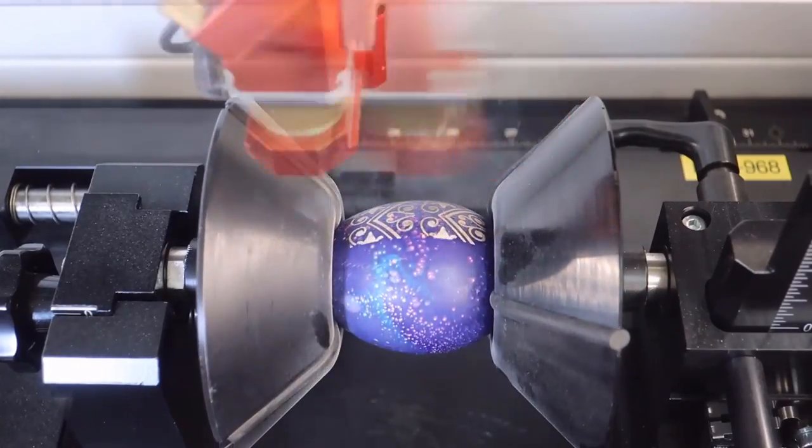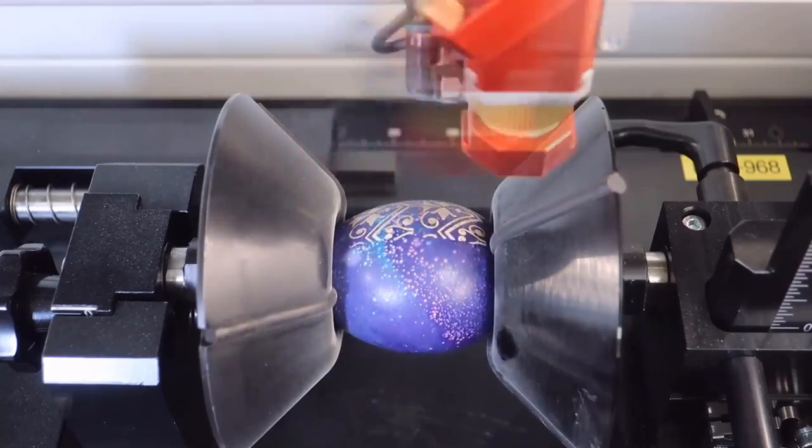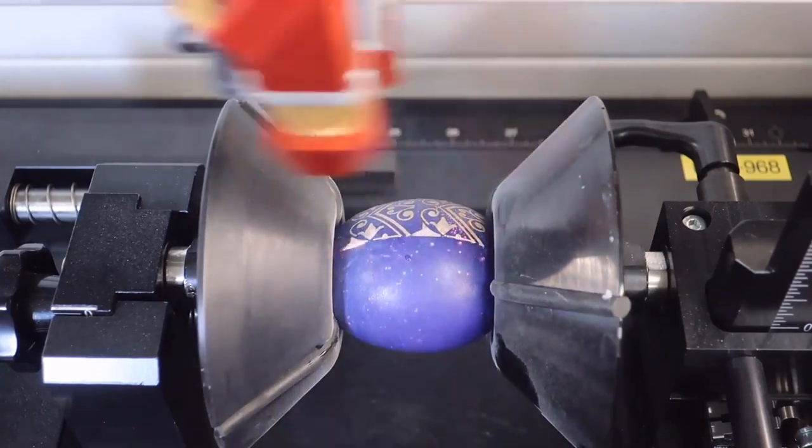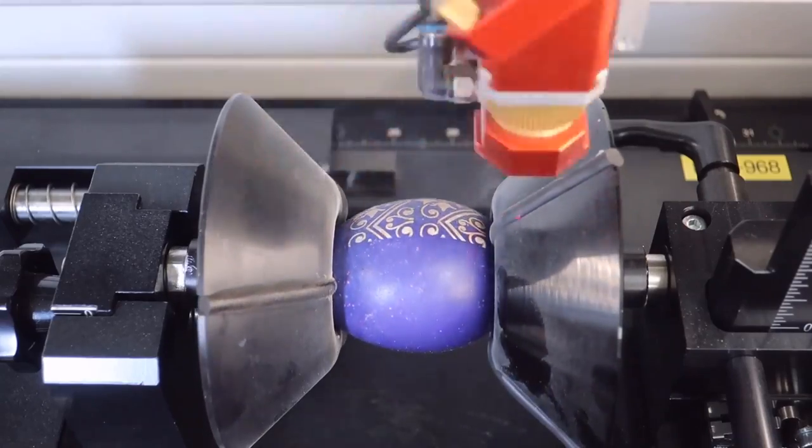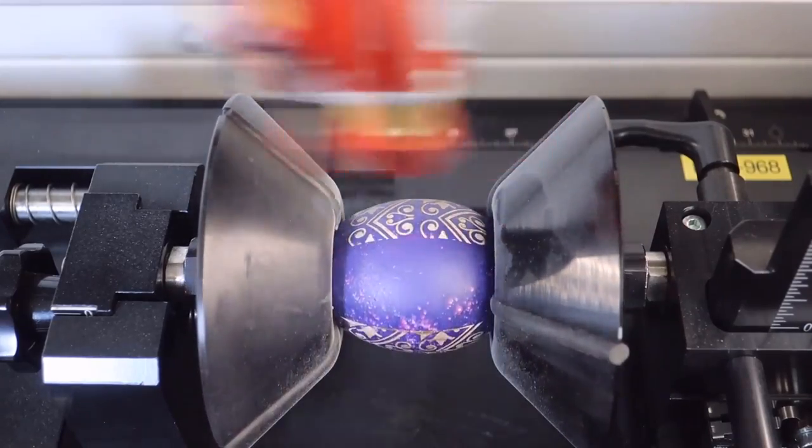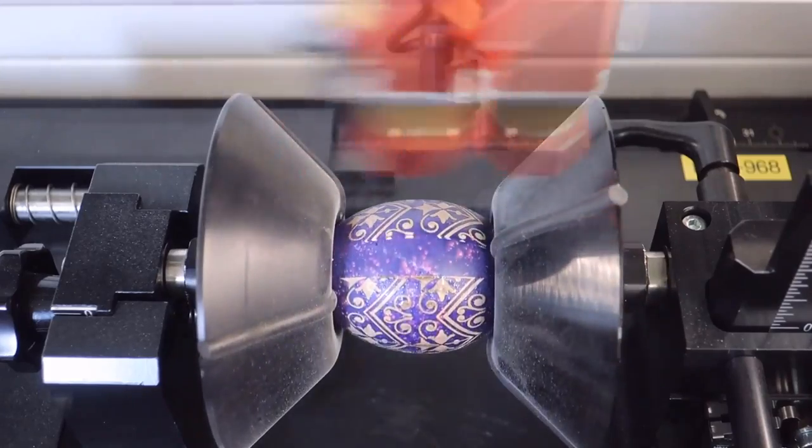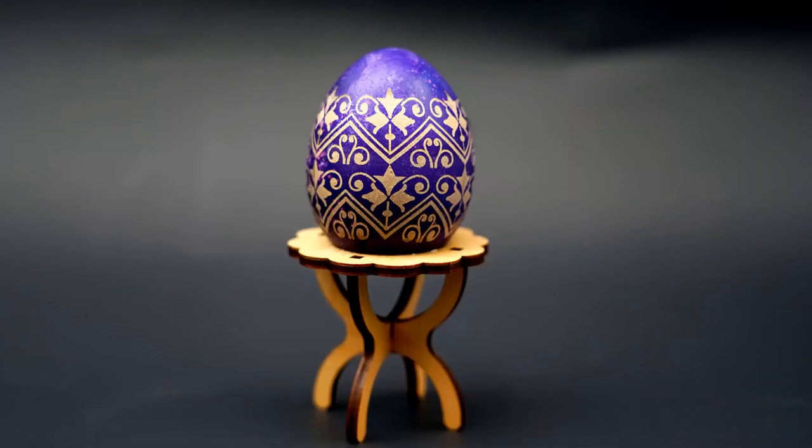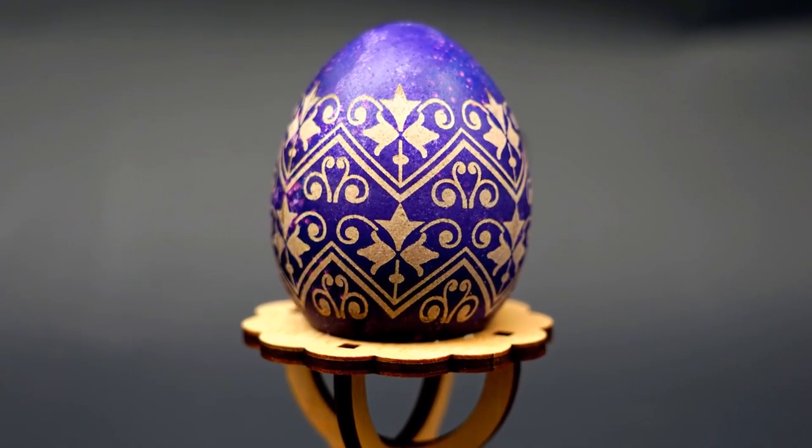Now let's try a white egg that has been dyed blue. The resulting wet engraving is most likely due to the abrasion of the laser removing the layer of dye on the shell surface. Although it delivers a result that is no less detailed and beautiful.